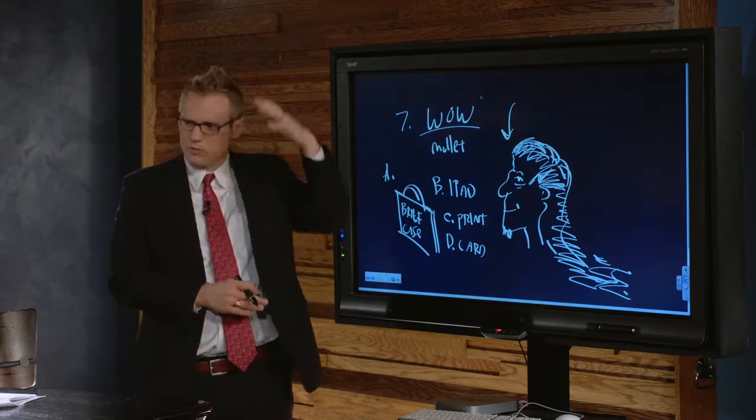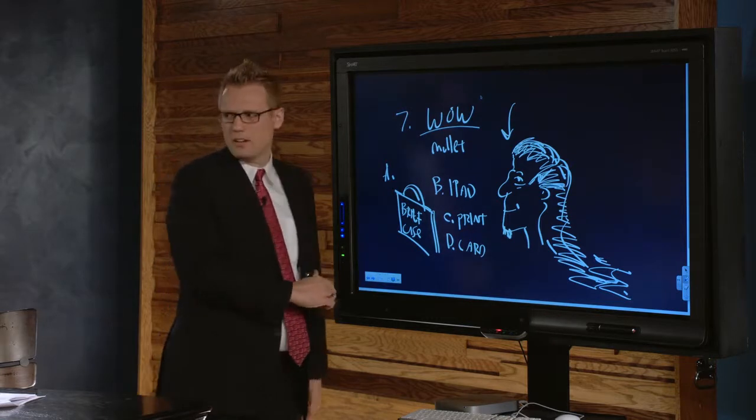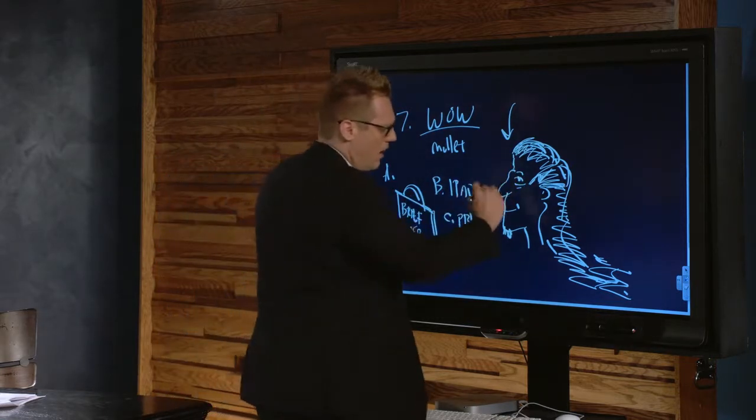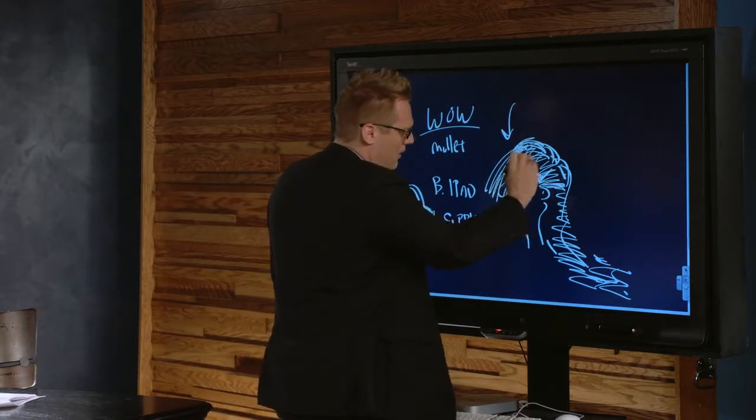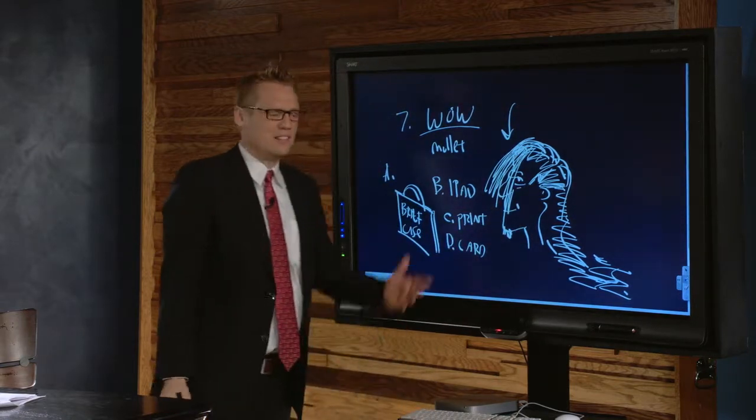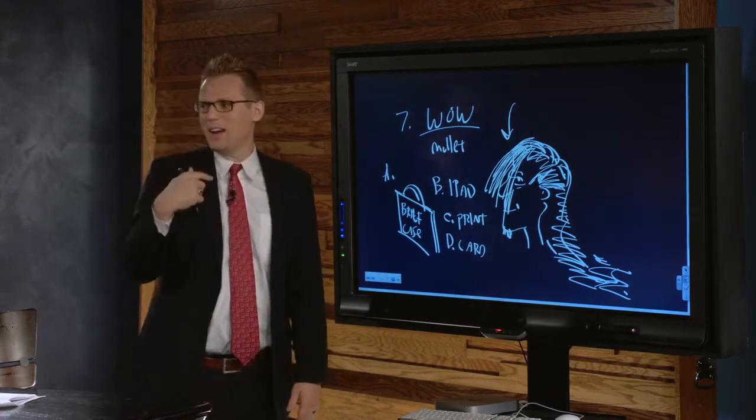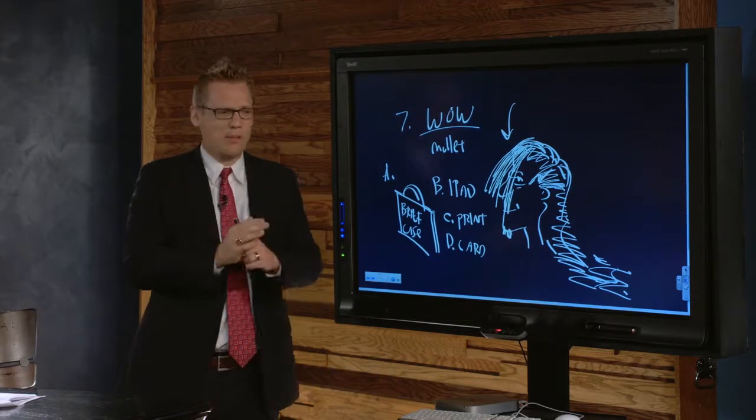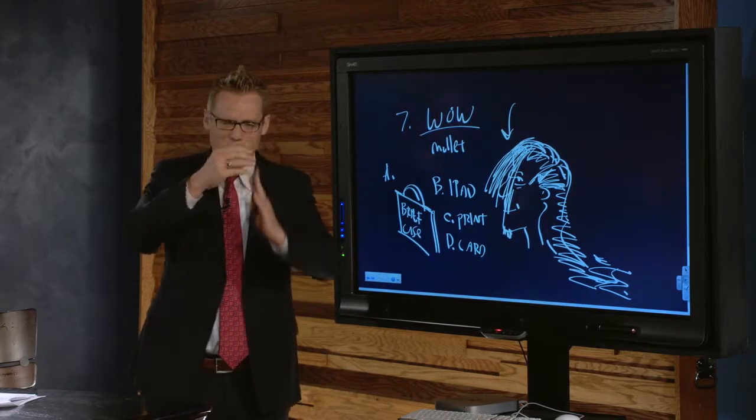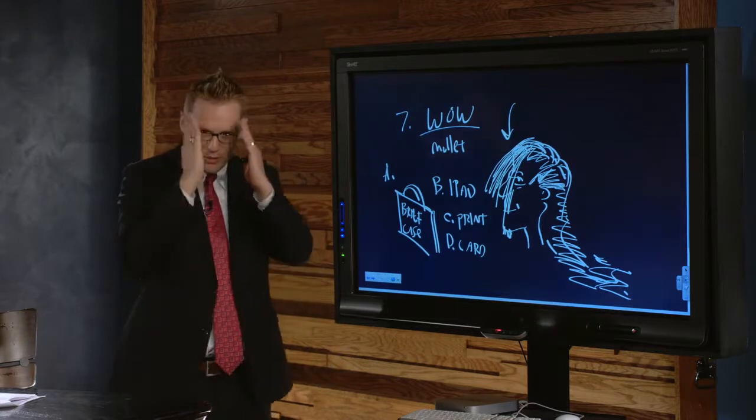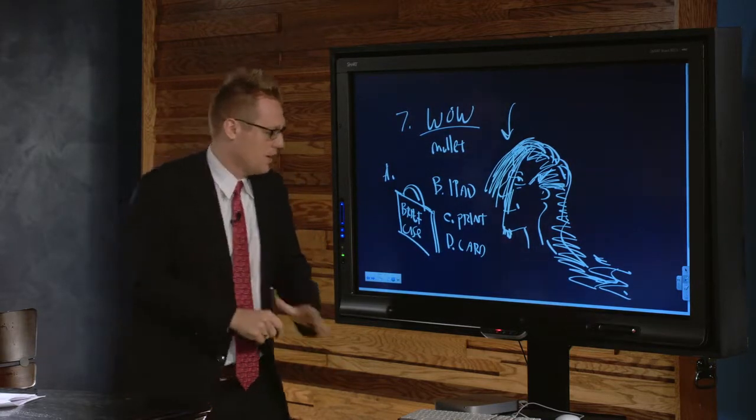Instead of having a mullet where it's formal in the front and party in the back, they got the party up front. I see people that have hair growing in the front. The idea of a perfect mullet is it looks sharp up front, and in the back, you've got the flow. You want to look like a pro up here, and in the back you want the flow, but you have to do it.